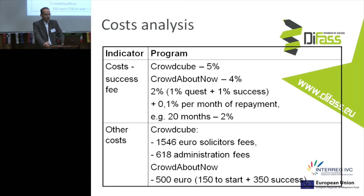What about other costs? In the case of Crowdcube we have over 1,500 Euro in solicitor fees and over 600 Euro in administration fees. In the case of Crowdabout Now, the enterprise has to pay only 500 Euro: 150 for start and over 300 for success. So altogether it is 500 Euro, which is cheaper than Crowdcube.